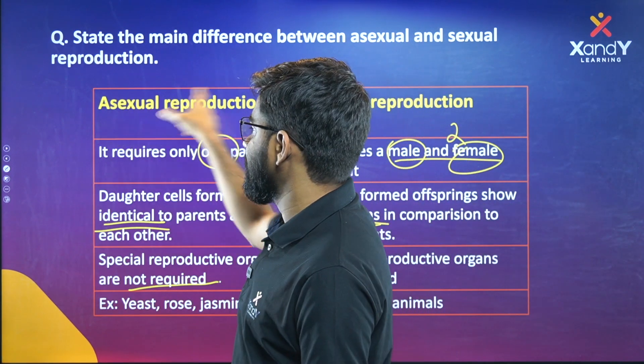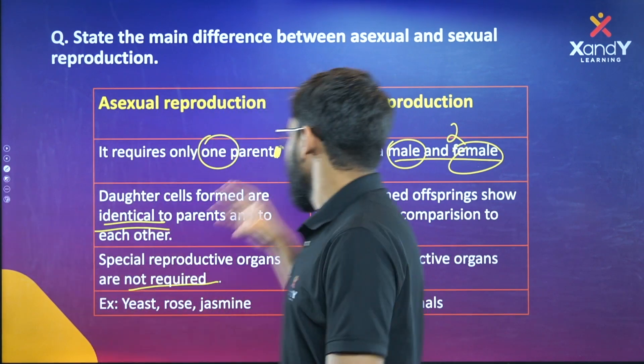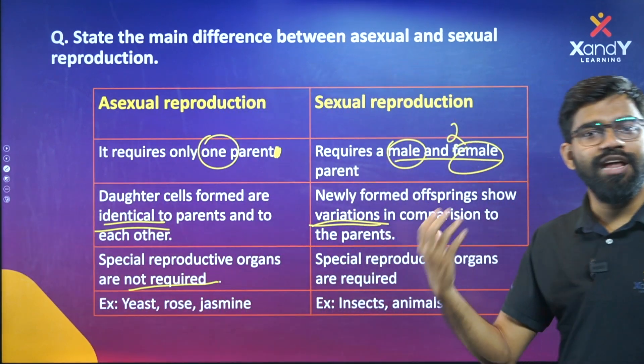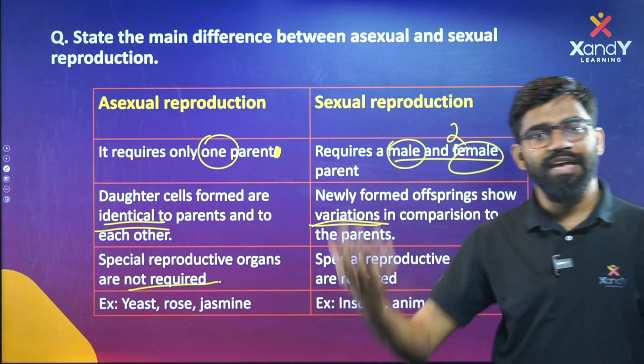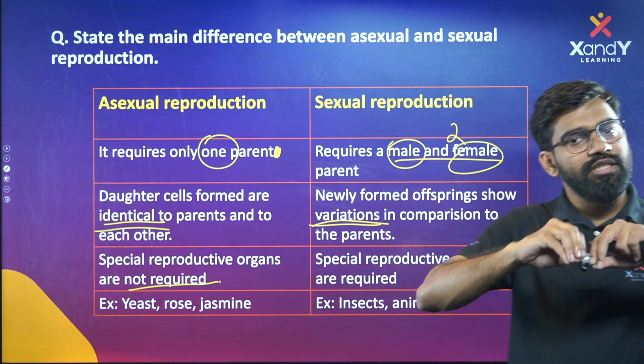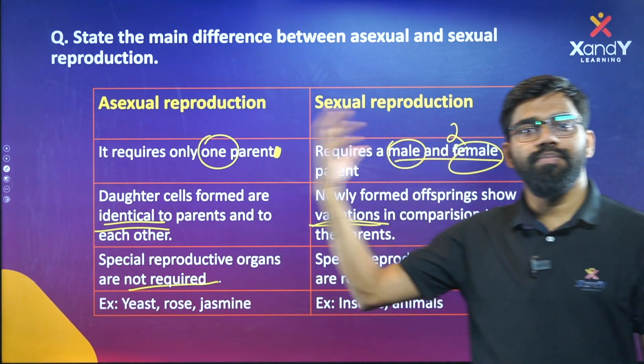In asexual reproduction, there is no gamete formation. In sexual reproduction, male and female gametes are produced and they fuse together.